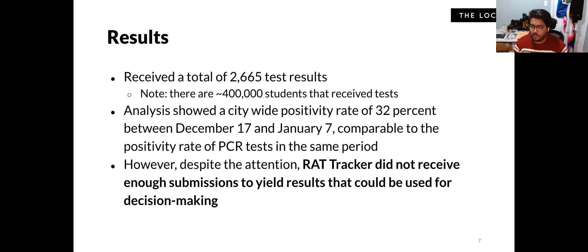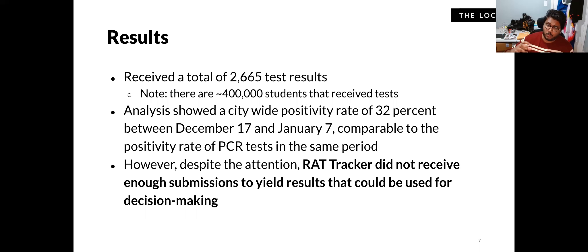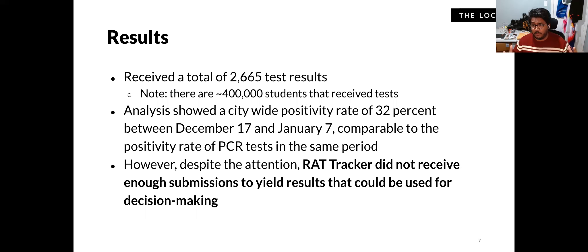However, because we didn't receive enough submissions — we had calculated that 10,000 submissions were required — we didn't get results strong enough to report at a school level, which was our goal. In our follow-up piece we noted that at a Toronto aggregate level you could see some trends, but ultimately the endeavor failed to deliver on what we initially wanted: granular-level data to help parents make informed decisions about returning to school.